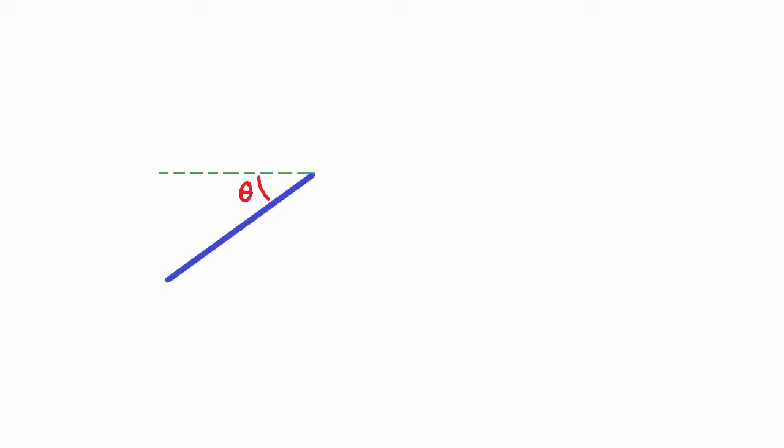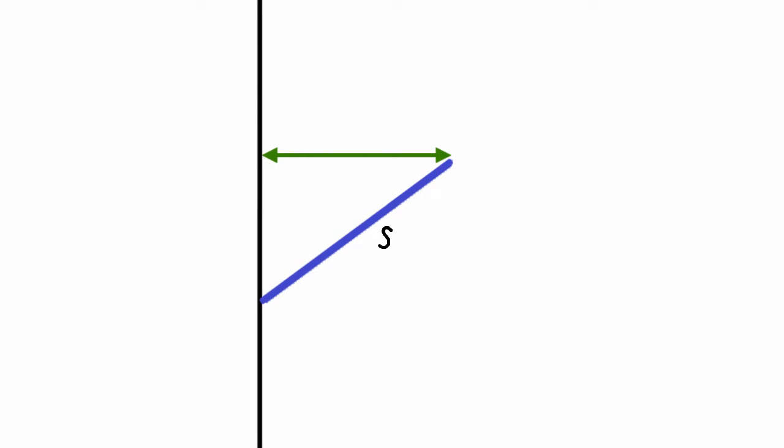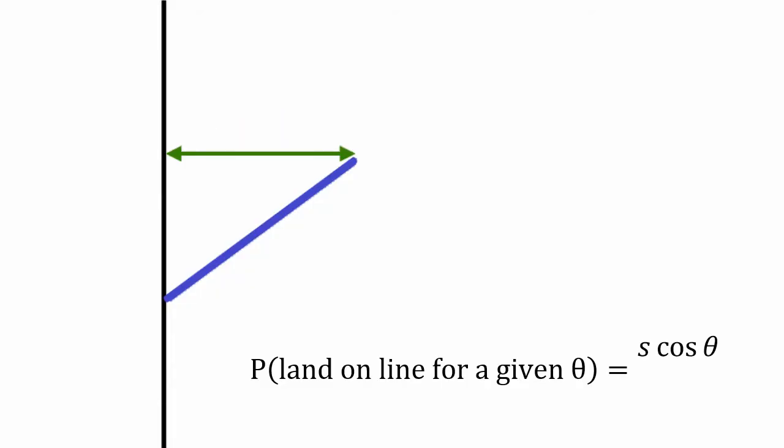Let's say the stick has a constant orientation theta. The value of x can range from 0 to L. I can translate the stick across keeping its rotation the same, and the distance over which it still crosses the line equals s times cosine of theta. So for a fixed theta, the probability of the stick landing on the line equals s·cos(theta) divided by L. Since theta can take any value from 0 to pi over 2, I can plot a graph where the curve s·cos(theta) represents all orientations where the stick crosses the line, and the outer rectangle represents all possible outcomes.